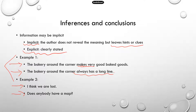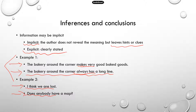A lot of times authors would use the implicit way. For the second example: explicit version — 'I think we're lost, we need directions.' But the implicit version — 'Does anybody have a map?' That implies that directions are needed because the person is asking for a map.